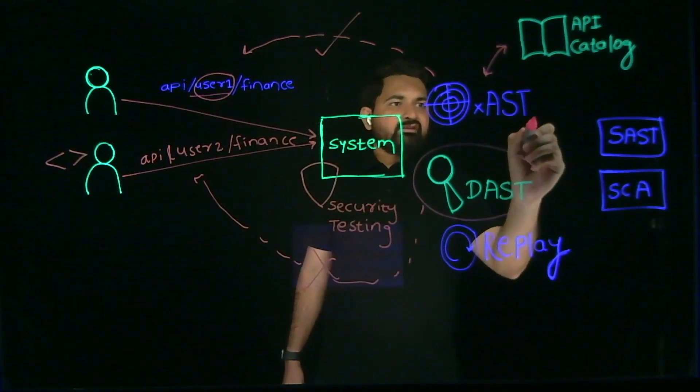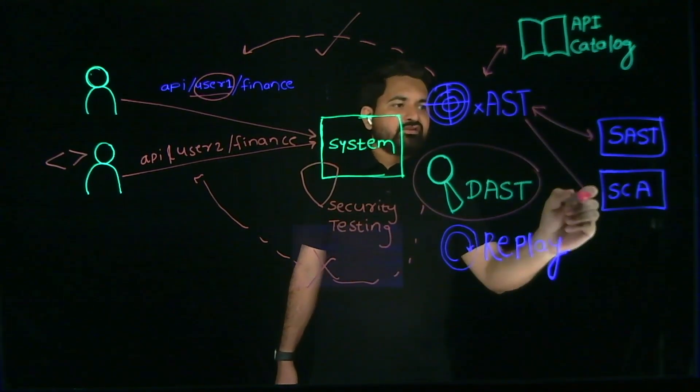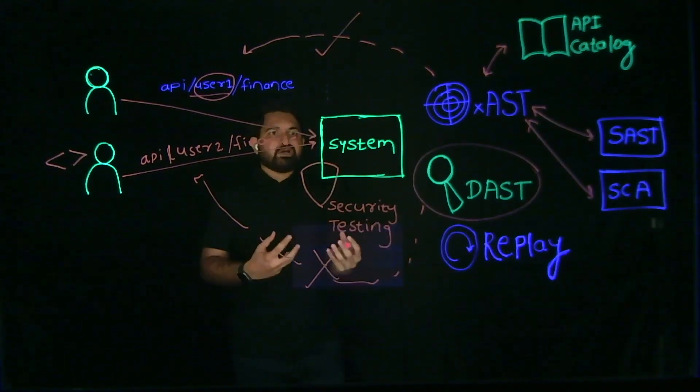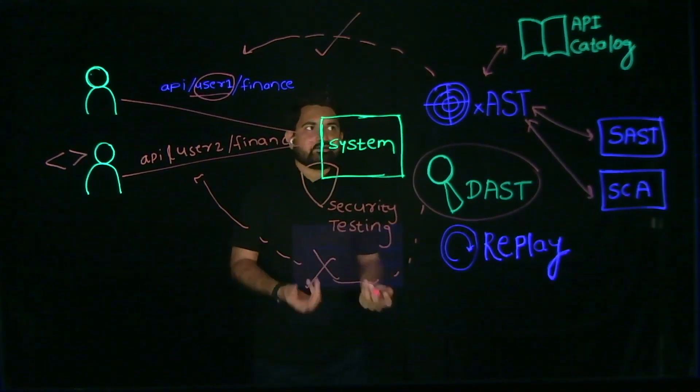Traceable XAST also correlates with different sets of tools. It gets information from different SAST tools, SCA tools, and eventually helps you prioritize vulnerability mitigation better.